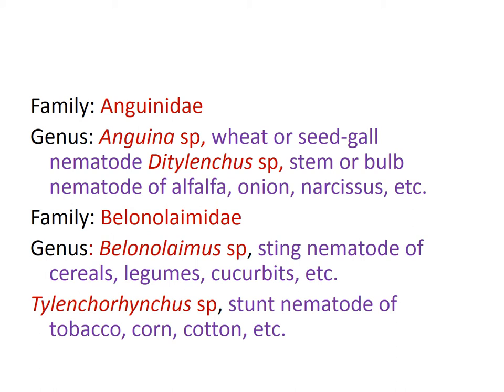The next family is Belonolaimidae. It is the family of sting nematodes. The important nematode is Belonolaimus, the sting nematode. And the stem nematode is Tylencorhynchus species. Tylencorhynchus species is a very common nematode.